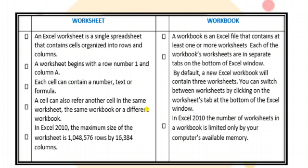A cell can also refer to another cell in the same worksheet, the same workbook, or a different workbook. In Excel 2010, the maximum size of the worksheet is 1,048,576 rows and 16,384 columns. The number of worksheets in a workbook is limited only by your computer's available memory — as much memory as you have, you can open that many worksheets. These are all the differences between a worksheet and a workbook.